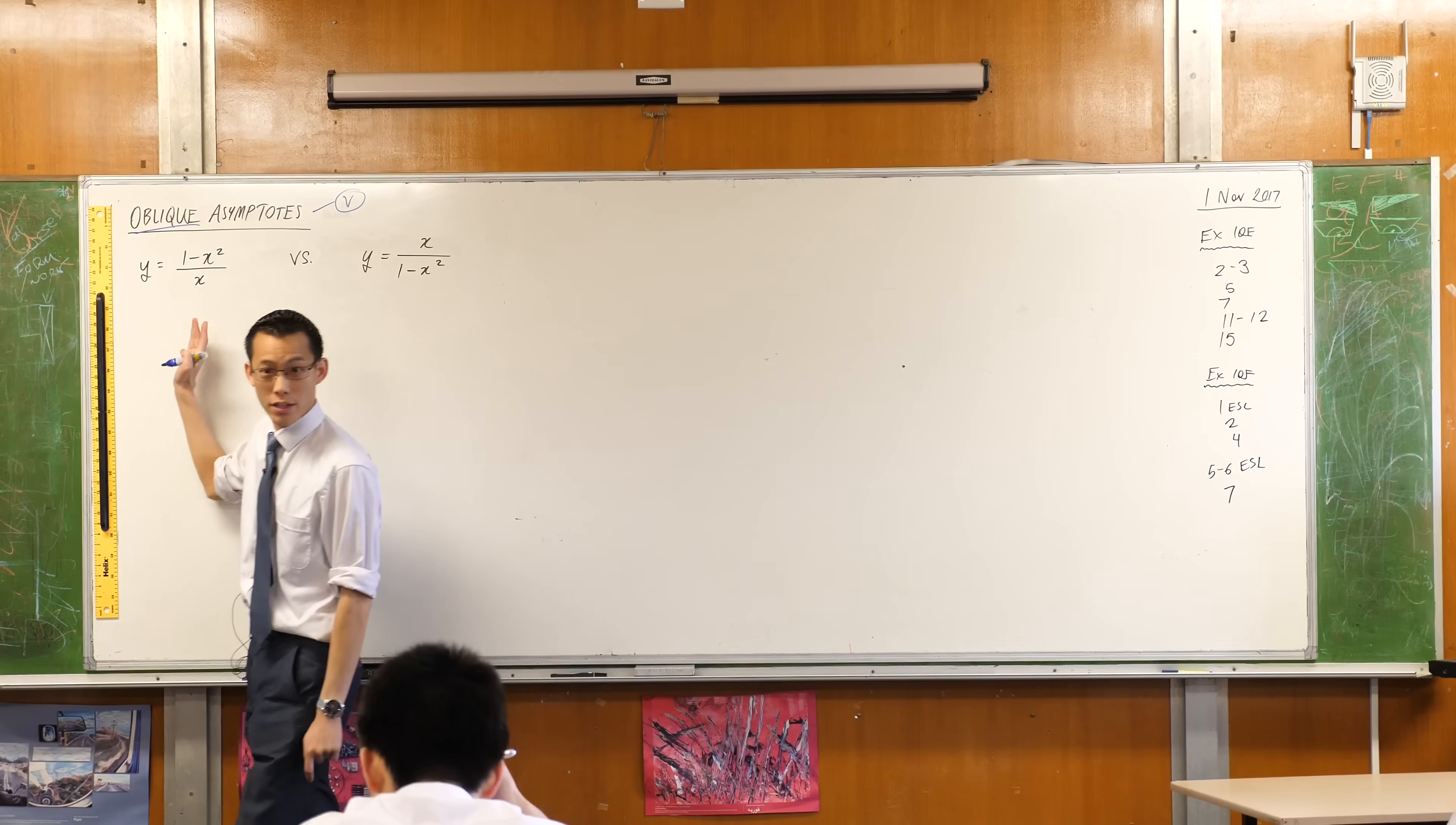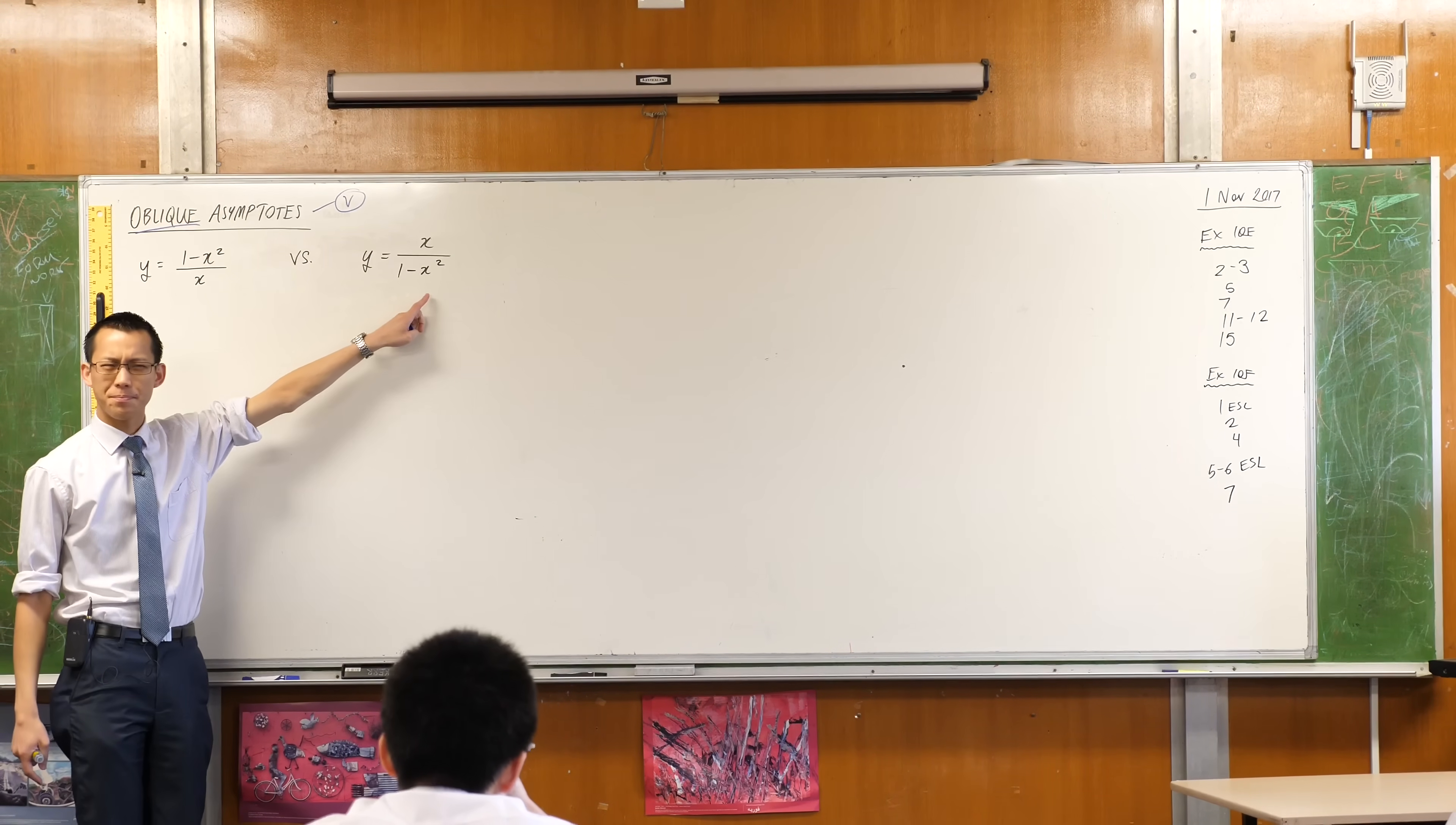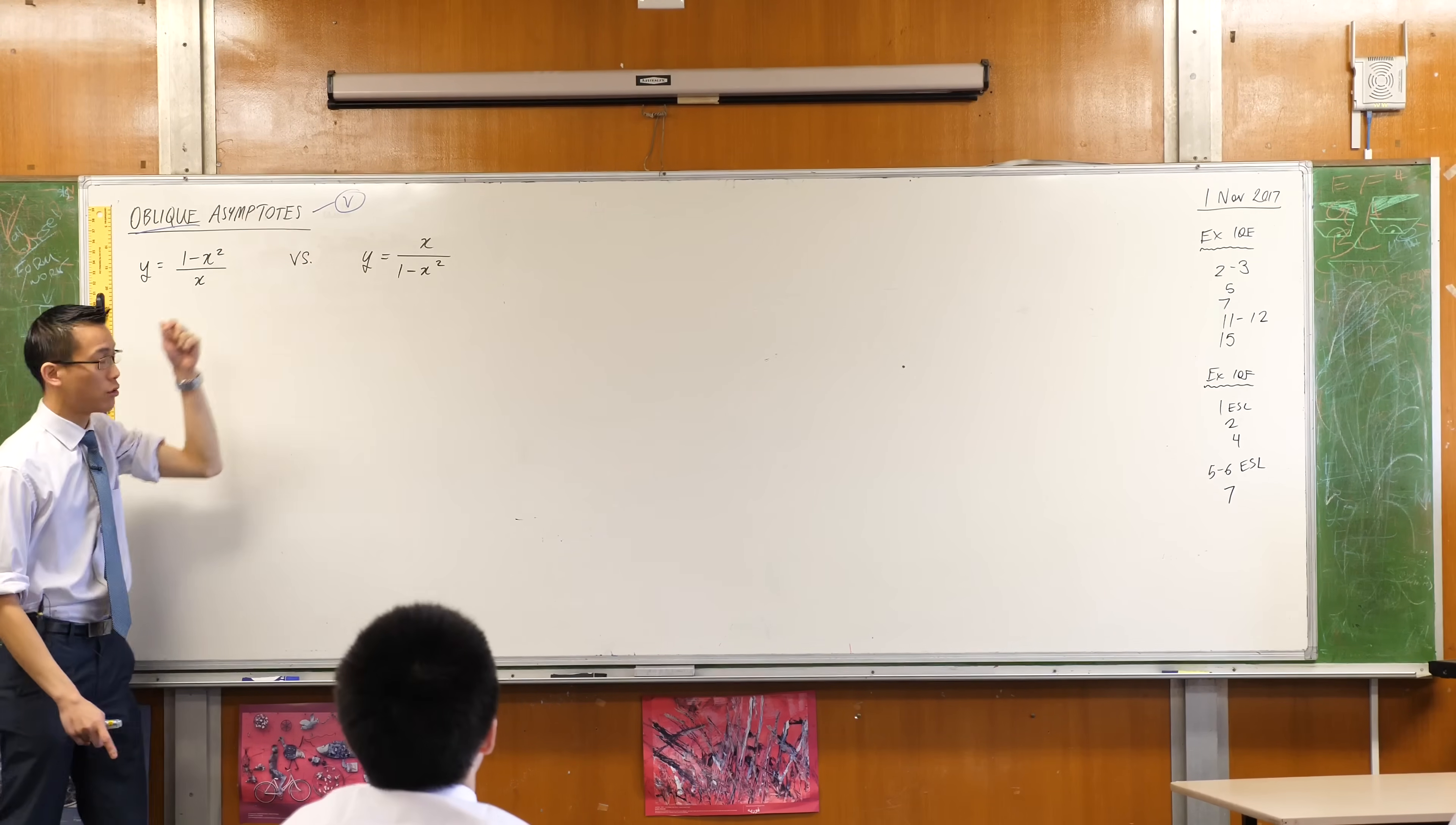You'll have a single one for this one. This is going to have two. Where are the vertical asymptotes for this guy going to be? x equals plus and minus one.